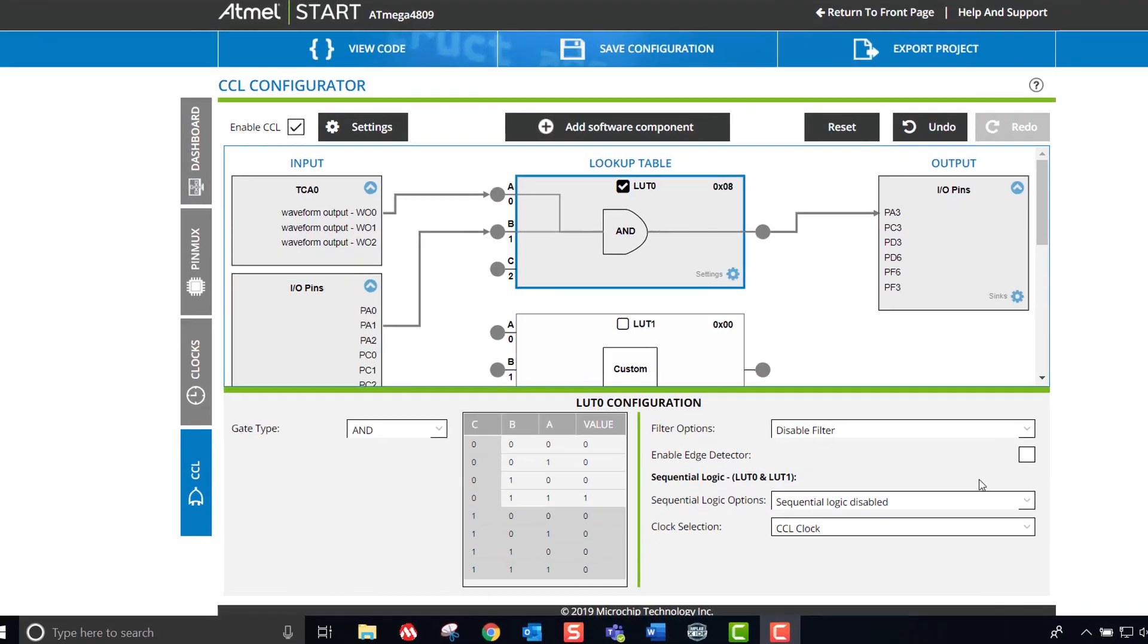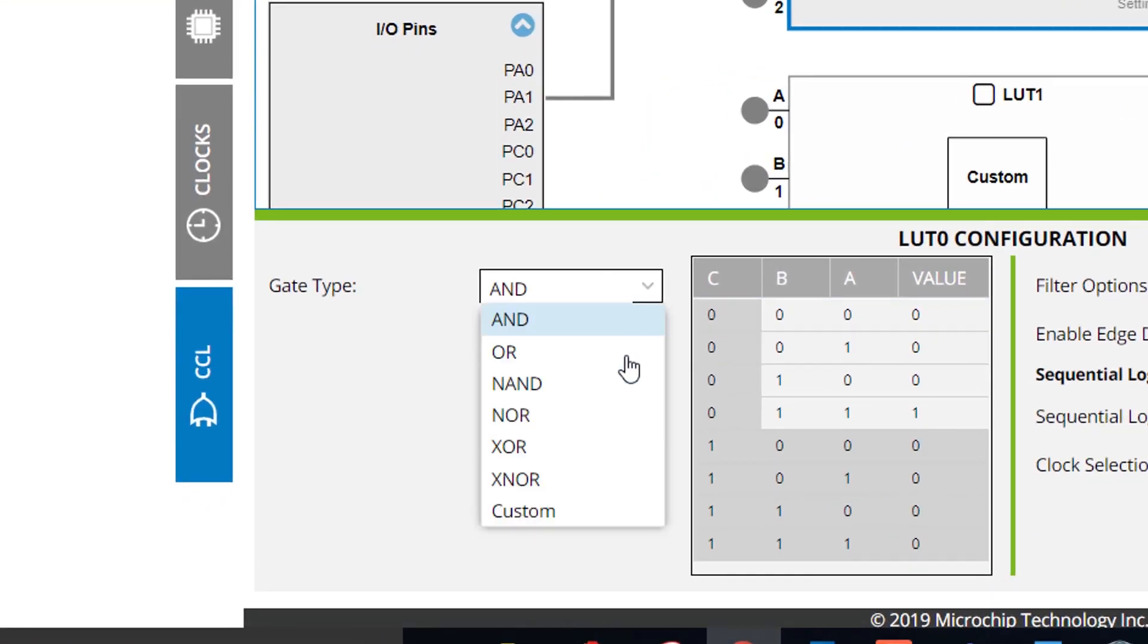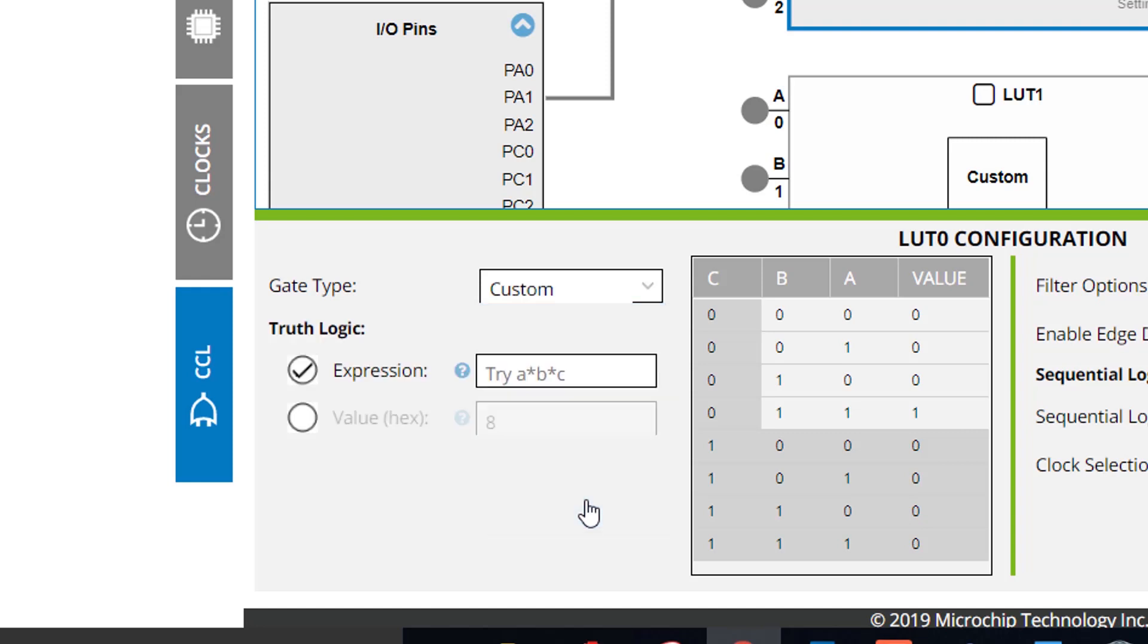Now I know this peripheral already sounds pretty cool, but wait, there's more. Not only can you add combinational and sequential logic, but you can also define the logic values of your CCL through a customizable truth table.